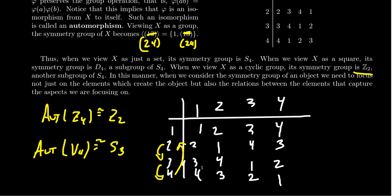When we consider the symmetry group of an object, we need to focus not just on the elements which create the object, but also the relations between the elements that capture the aspects we're focusing on. Is this set combinatorial, topological, geometric, algebraic, number theoretic? Is it ordered, partially ordered, a partition? The symmetry group of a set depends on the underlying structure — geometric, algebraic, what have you. In all aspects, the symmetries will always turn out to form a group.